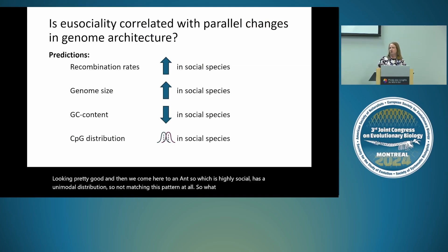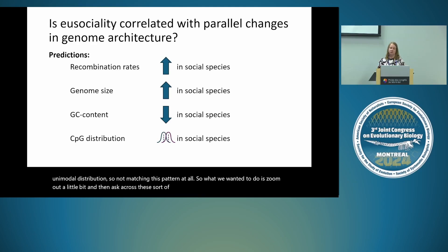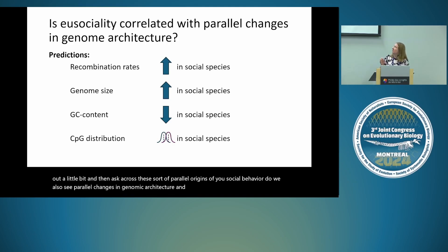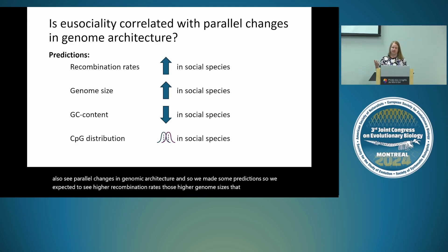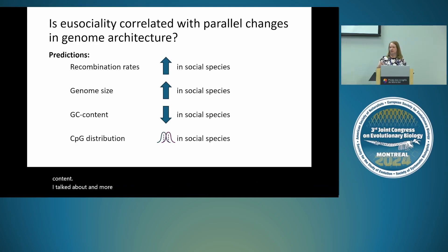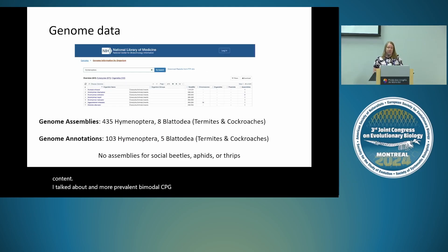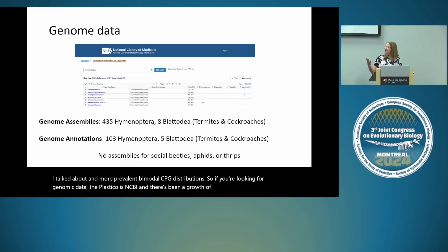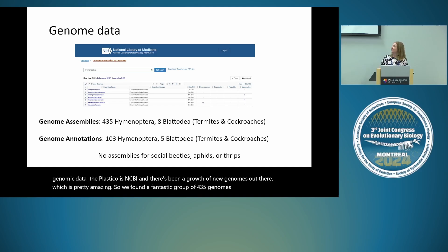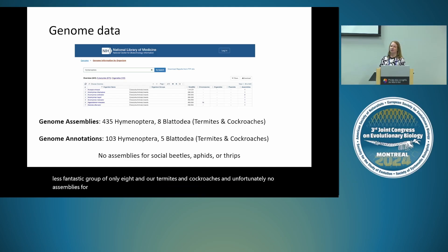We wanted to zoom out and ask whether, across parallel origins of eusocial behavior, we also see parallel changes in genomic architecture. Our predictions were: higher recombination rates, larger genome sizes, lower GC content, and more prevalent bimodal CpG distributions in social species. Looking at NCBI, we found a fantastic group of 435 genomes in Hymenoptera, a less fantastic group of only eight termites and cockroaches, and unfortunately no assemblies for other independent origins of sociality, so all formal analyses are in Hymenoptera.